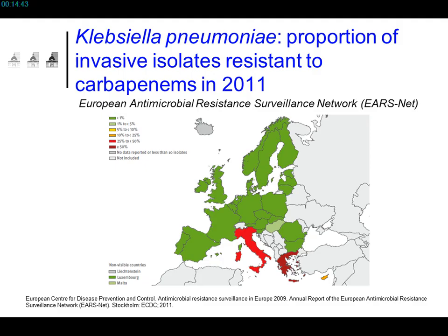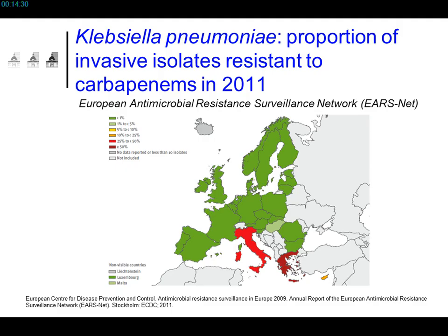For the moment, carbapenemase-producing strains are still sporadic here, but in Italy, Greece, and other countries they are now above the warning level. So if we go down that route, using the same comparison shown by Thomas, we're going to hit the wall — and very quickly.